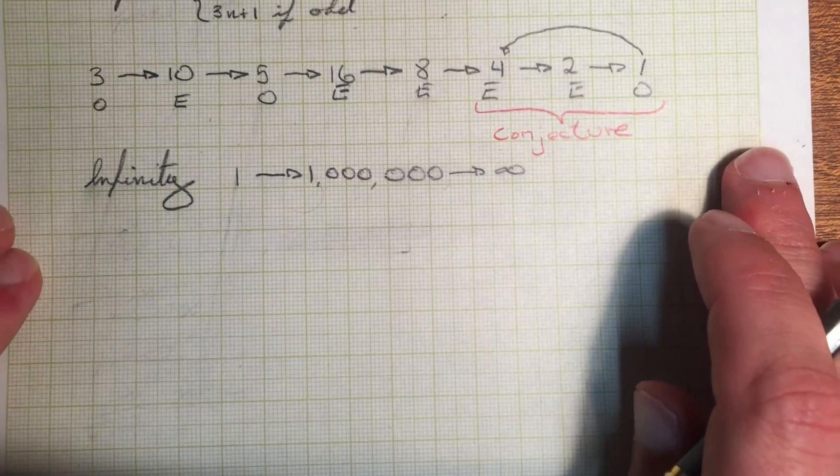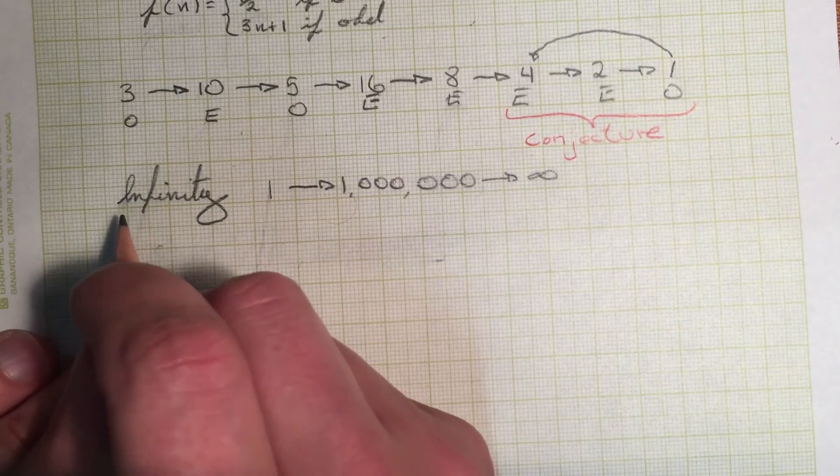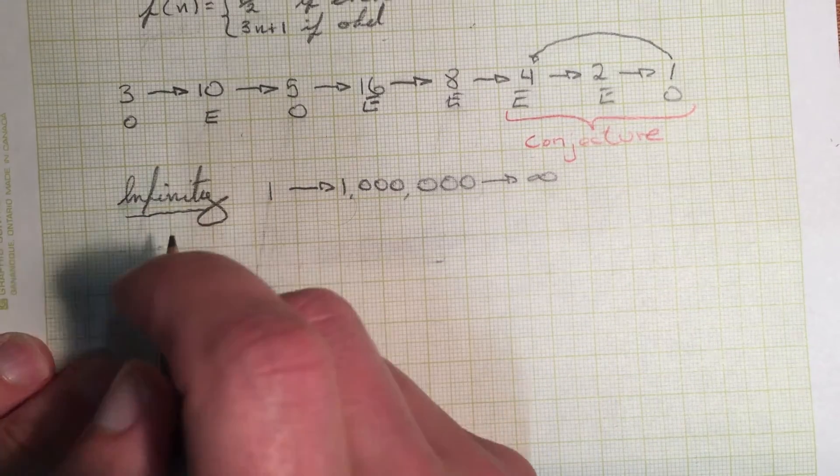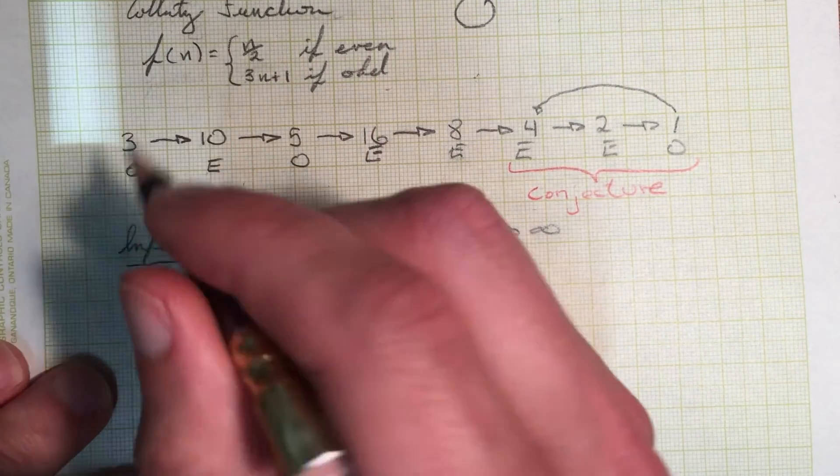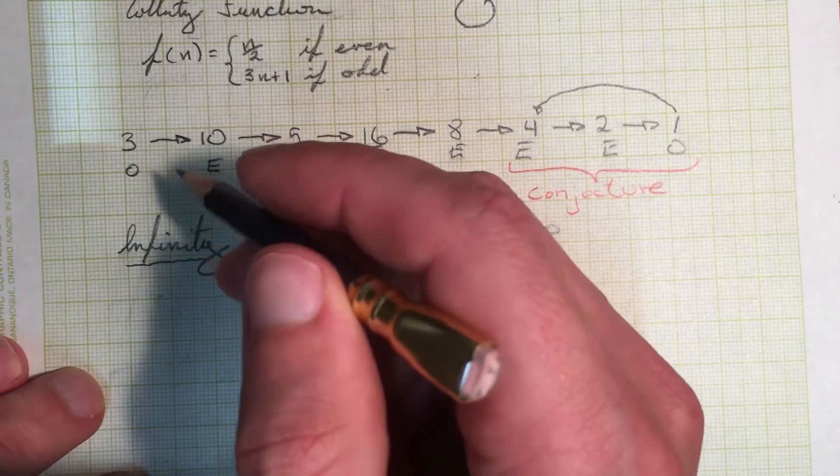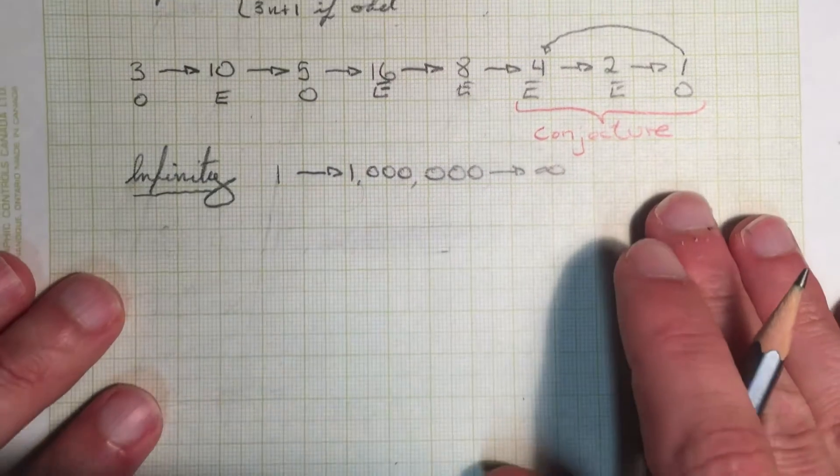So to start, when I was looking at this problem, to me, this is really a problem of infinity. You can put any number into this function from one to infinity. So I wanted to corral the problem, I wanted to constrain the problem initially.